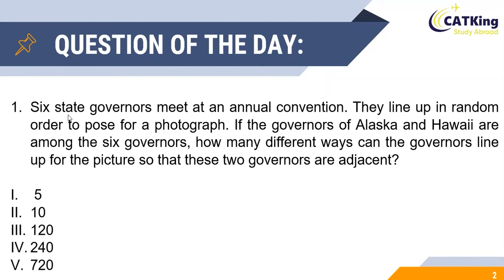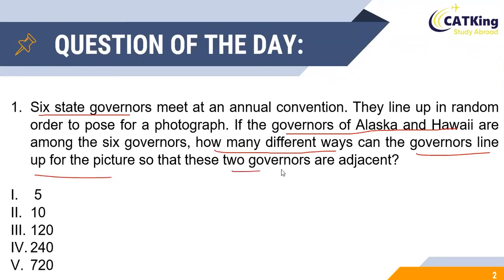In this question we are given that 68 governors meet at an annual convention and line up in random order to pose for a photograph. It is also given that the governors of Alaska and Hawaii are among the six governors, and we are asked to find in how many different ways the governors can line up for the picture so that these two governors are always adjacent.